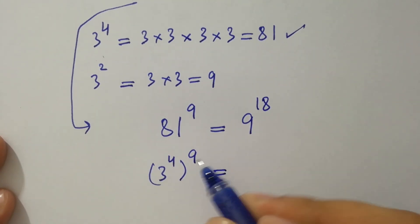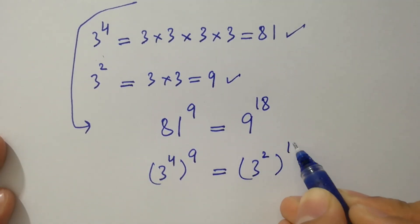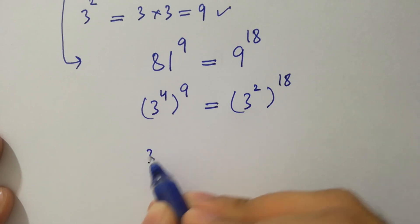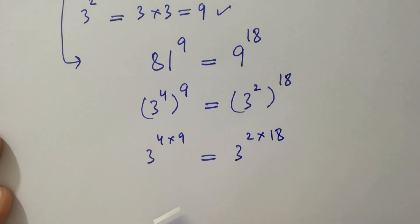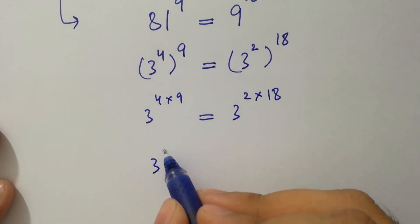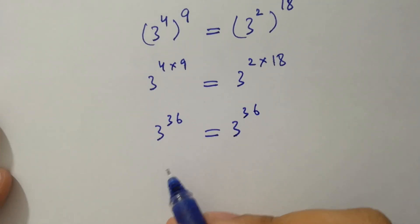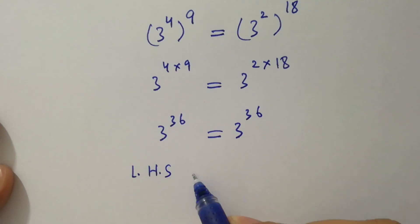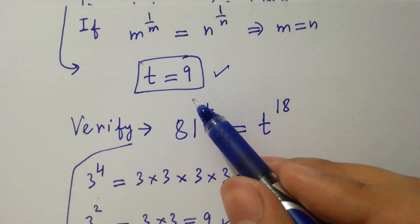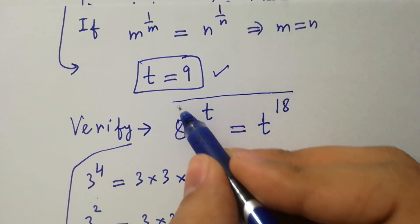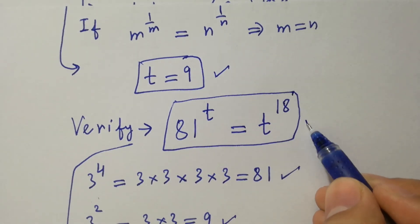And 9 is 3 squared, so it will be 3 squared to the whole power 18. This gives 3 to the power 4 times 9 equal to 3 to the power 2 times 18, which is 3 to the power 36 equal to 3 to the power 36. Left hand side equals right hand side, which shows that the value of t equal to 9 satisfies the equation 81 to the power t equal to t to the power 18.